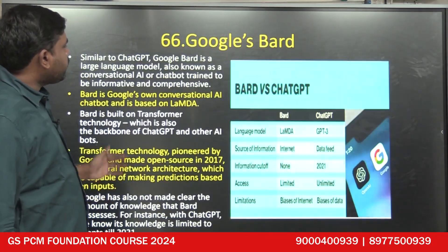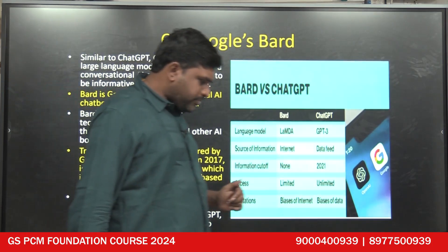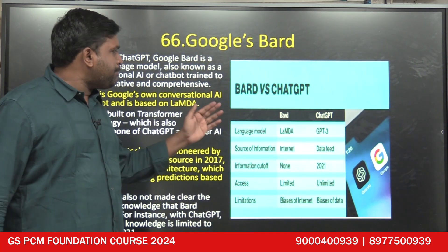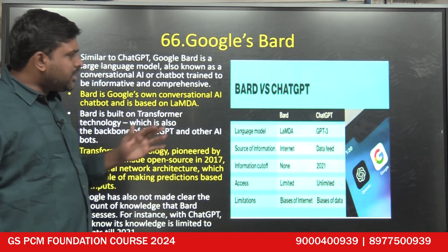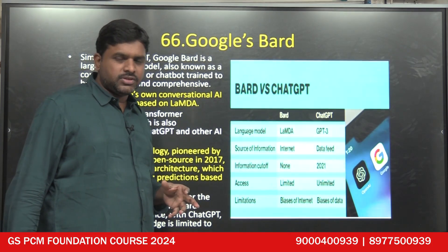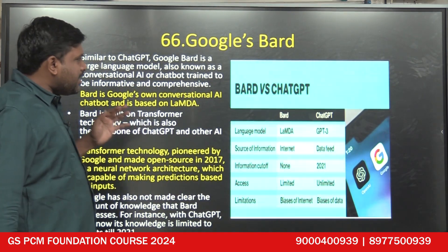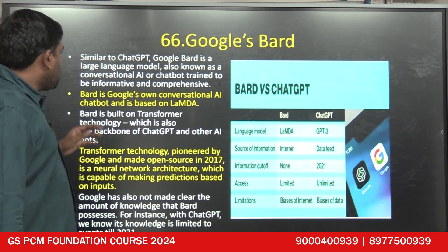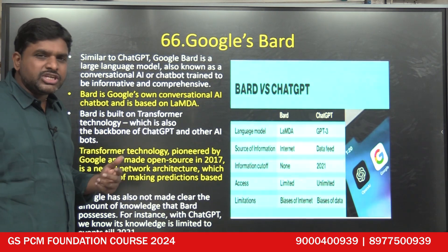Today I am going to discuss Google Bard, which is in the news. It is a counterpart to ChatGPT. ChatGPT is an artificial intelligence-based tool giving complete descriptions on topics. Google has come up with its own version of ChatGPT, which is called Google Bard. Google Bard is a large language model — a computer language model known as conversational artificial intelligence.